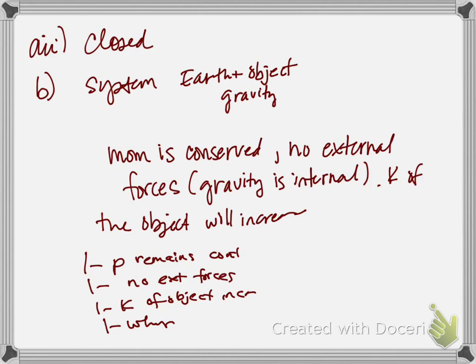Remember, the gravitational potential energy of the object Earth system is converted into the kinetic energy of the object, which increases the speed of the object. Furthermore, as the object falls towards Earth, the net external force provides an impulse to the object to increase its momentum, which increases its speed. So the momentum of the block is increasing, but the momentum of the system is not. And then we have one point for your logical paragraph. So seven points for that one.